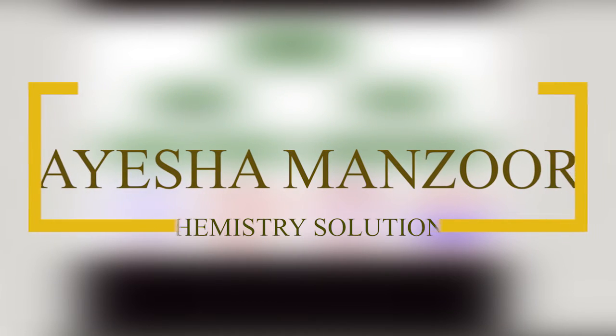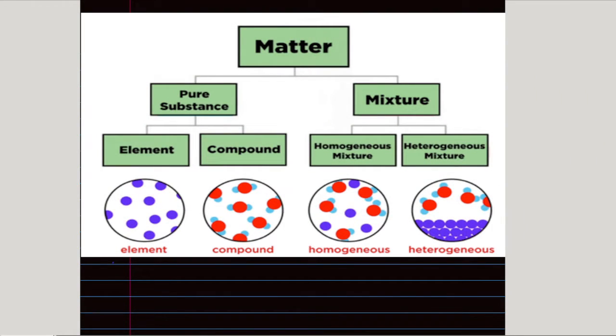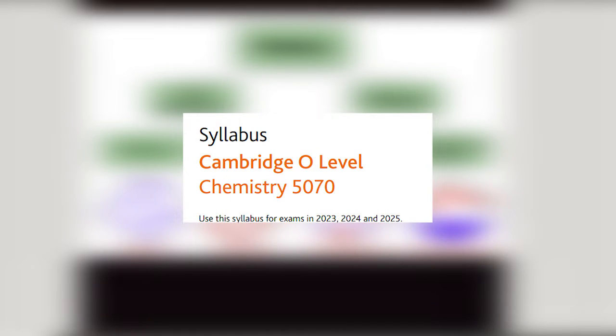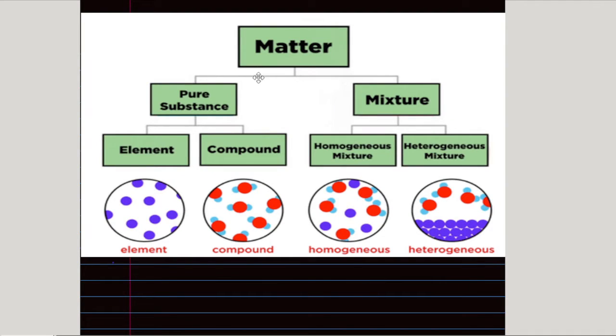Bismillahirrahmanirrahim. This is Miss Aisha Manzoor and you are watching my channel Chemistry Solutions. Today in this lesson we are going to discuss a topic from the Cambridge O Level Chemistry 5070 syllabus and the Cambridge IGCSE Chemistry 0620 syllabus for 2023 to 2025. The component we are going to discuss is 2.1: Elements, Compounds and Mixtures. By the end of this lesson you will be able to describe the differences between elements, compounds and mixtures.